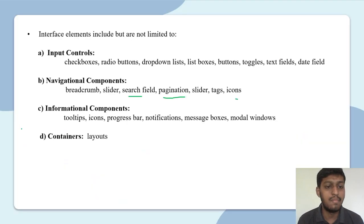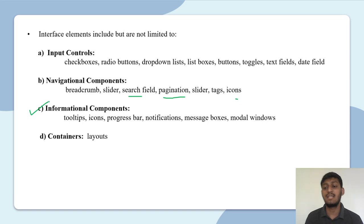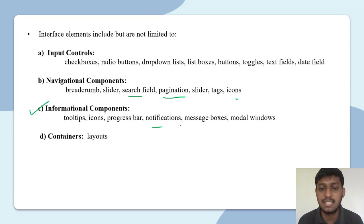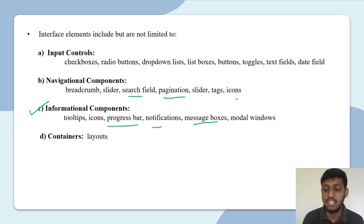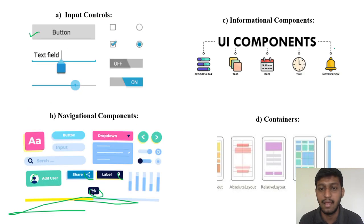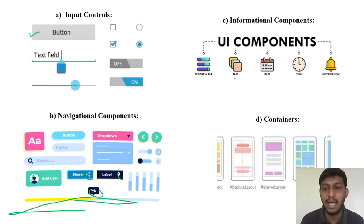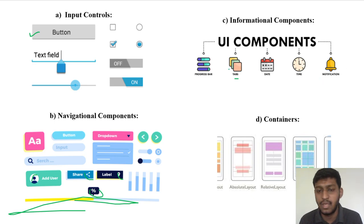Next are Informational Components — where you can get information. This includes Notifications, Message Box, Progress indicators showing how much has loaded, and Tooltips. So these are your UI components. Other elements include Tabs, Dialog Boxes, and Notifications. These are the UI components.